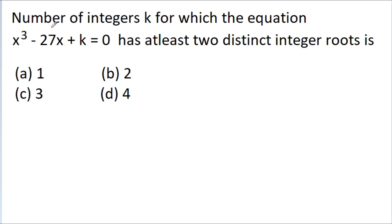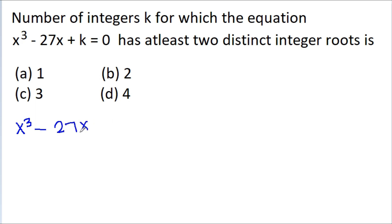In this video, we have to find the number of integers k for which the equation x³ - 27x + k = 0 has at least two distinct integer roots. The given equation is x³ - 27x + k = 0.